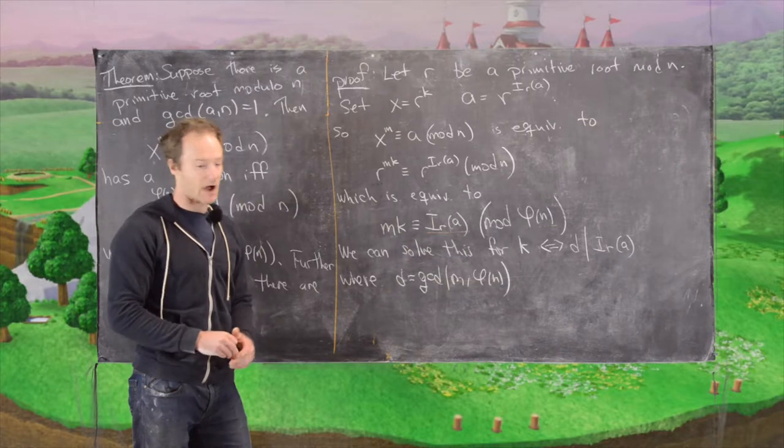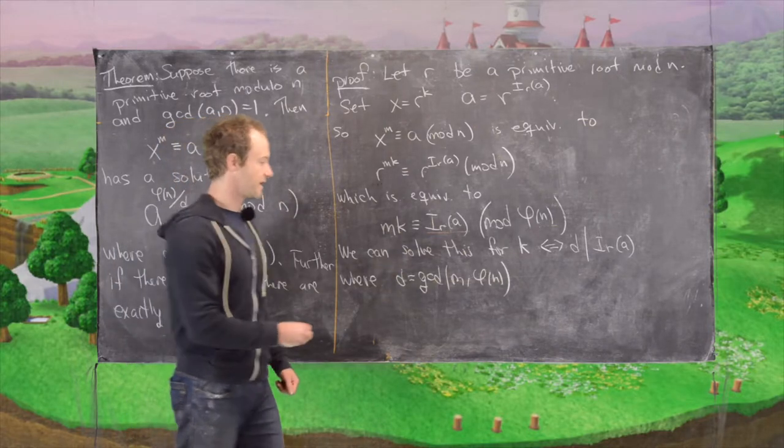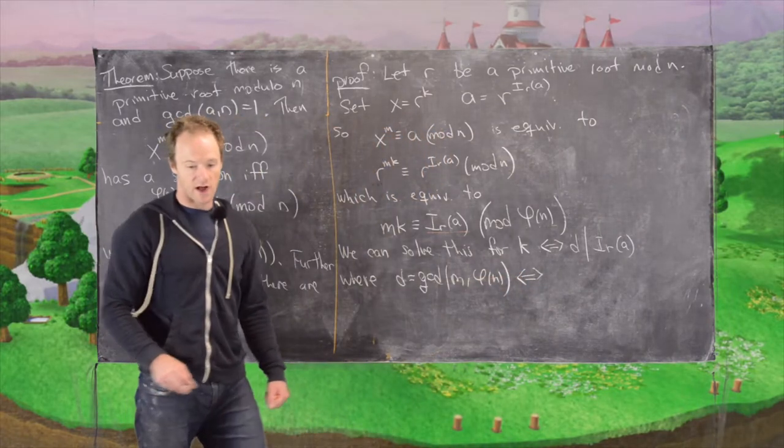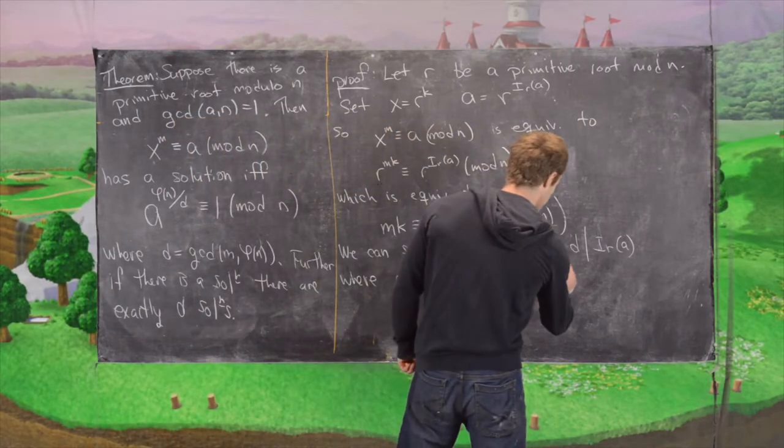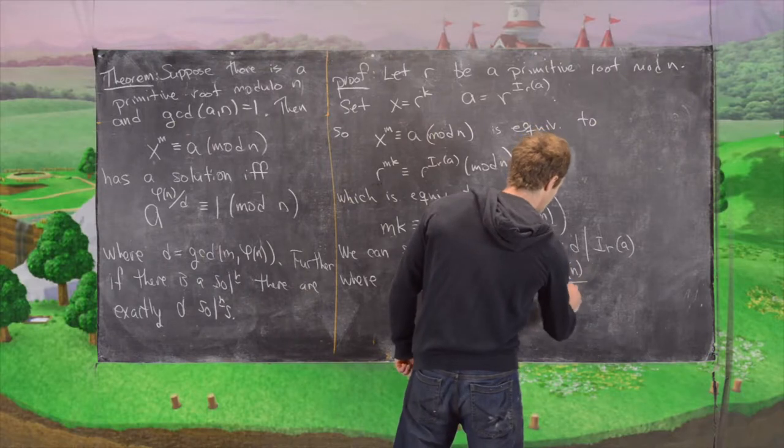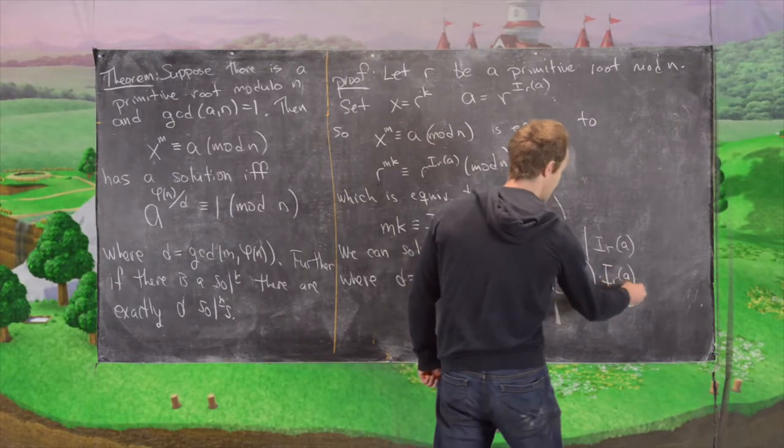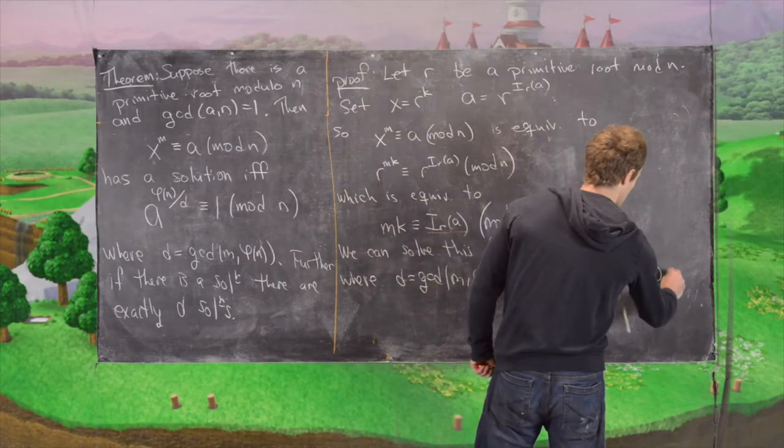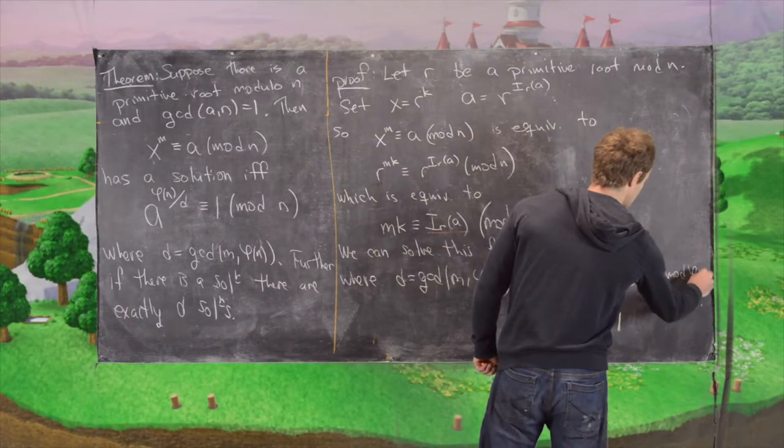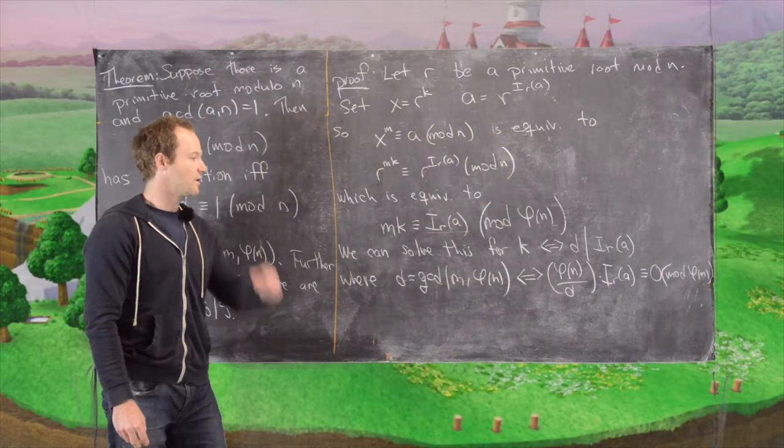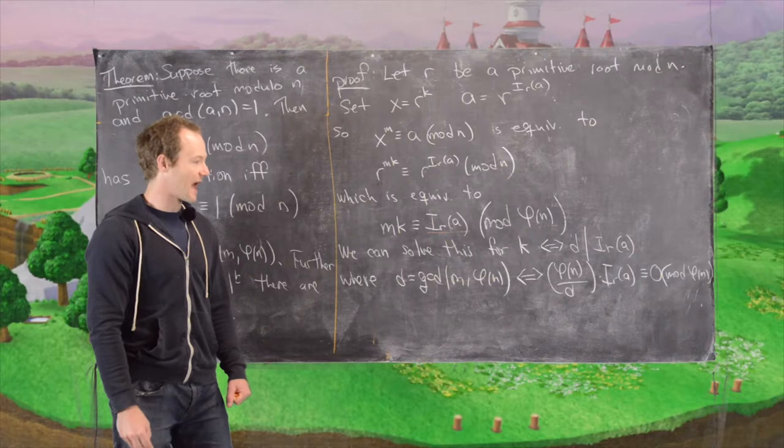This is equivalent to the following: phi of n divided by d times i_r(a) is congruent to 0 mod phi of n.